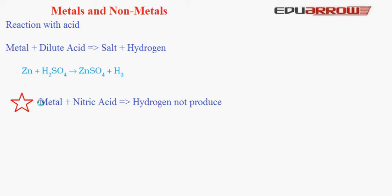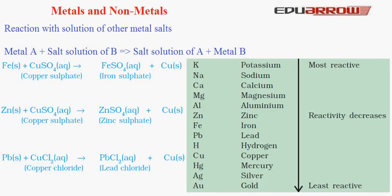Now let us study the reaction of metals with salt solutions of other metals. The general reaction is: Metal A + Salt Solution of B → Salt Solution of A + Metal B. For example, iron reacts with copper sulfate to give ferrous sulfate and copper. Similarly, Pb + CuCl₂ → PbCl₂ (lead chloride) + copper. This reaction is possible only if metal A is more reactive than metal B. The reactivity series from most to least reactive is: potassium, sodium, calcium, magnesium, aluminium, zinc, iron, lead, hydrogen, copper, mercury, silver, and gold — reactivity decreases going down the series.